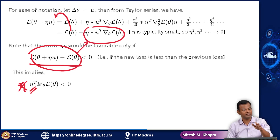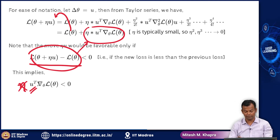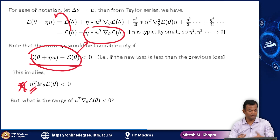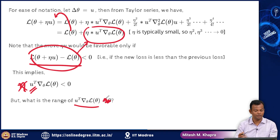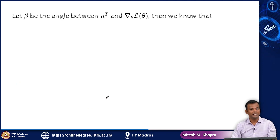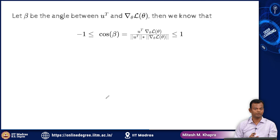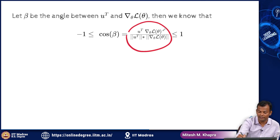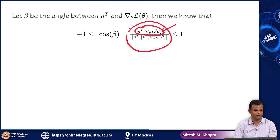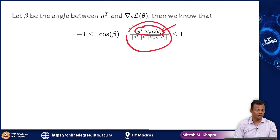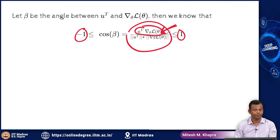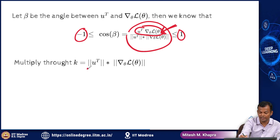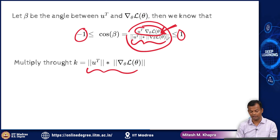Using this condition I want to find a good u, which not only satisfies this condition but satisfies it in the best possible way. This is the dot product between two vectors. Let beta be the angle between u and the gradient vector — then cos(beta) equals u^T times the gradient divided by the product of their magnitudes. This quantity that I am interested in shows up in this formula and cos(beta) is bounded, so this quantity is also bounded.